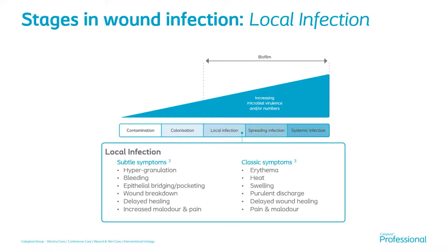If we don't manage to get on top of it, it will lead to spreading or systemic infection. The local infection signs and symptoms include hypergranulation, some bleeding, breakdown in the wound tissue — the wound starts to get bigger and wetter — a noticeable delay in healing, and the patient may be experiencing pain or have noticed an odour. Some of the really classic symptoms would be heat, swelling, purulent discharge, and pain for the patient.